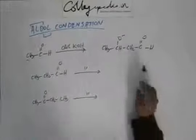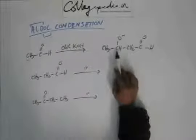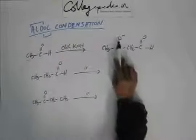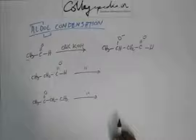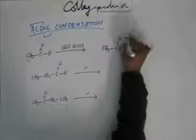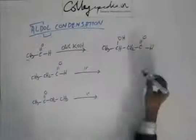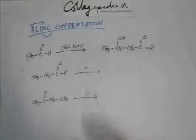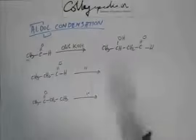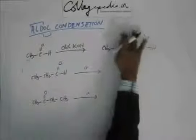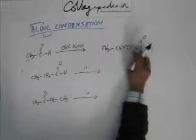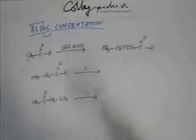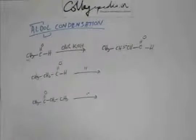The negative charge came and attacked the C double bond O, so the negative charge appears on the oxygen. After protonation, you get a neutral aldol — this is indeed the aldol: you have the aldehyde group and you have the alcohol. This is the aldol. When you heat it, there will be alpha-beta unsaturation and the compound will be an alpha-beta unsaturated carbonyl compound — that's the product from the first reaction.